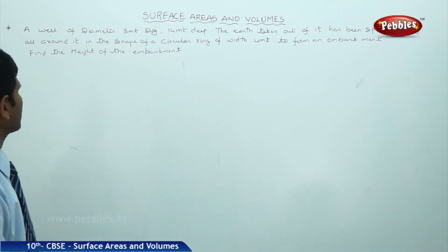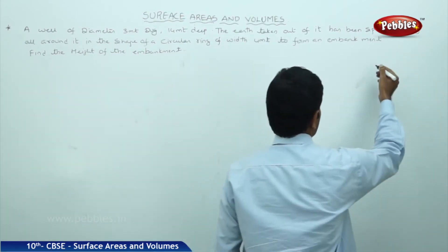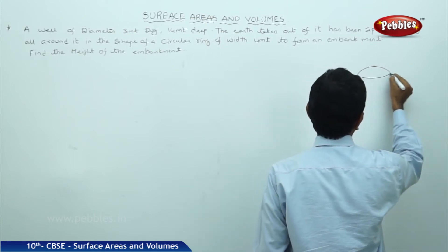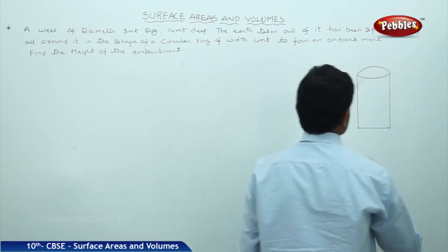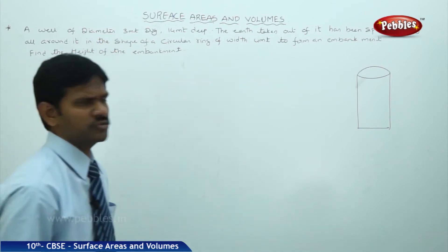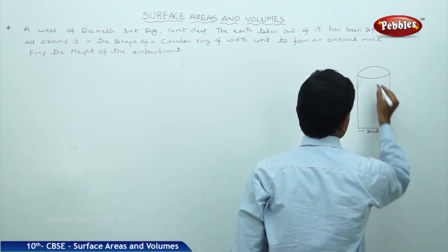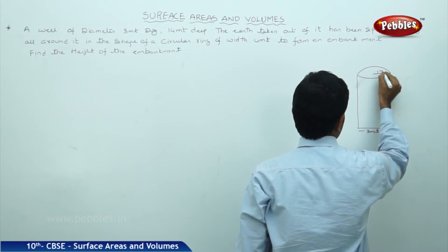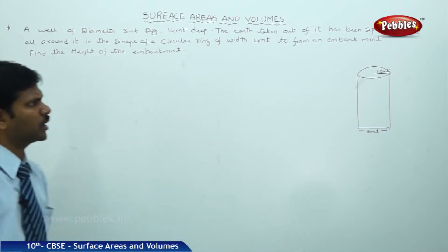Now let us follow the diagram. A well of diameter 3 meters — a well is a cylindrical shape. Its diameter is 3 meters. Therefore, the radius is 3 by 2, that is 1.5 meters.